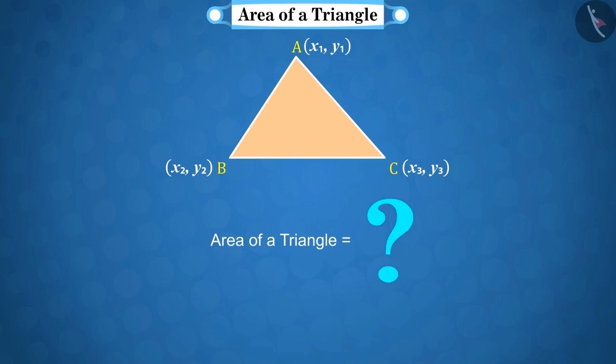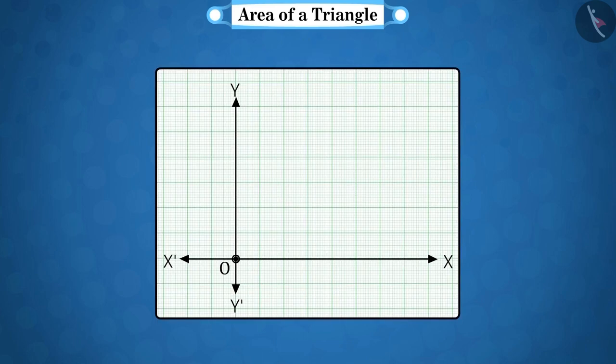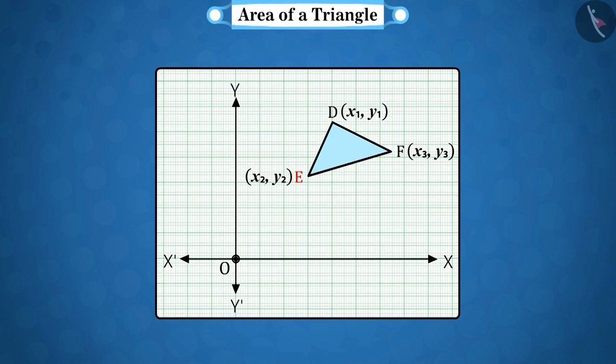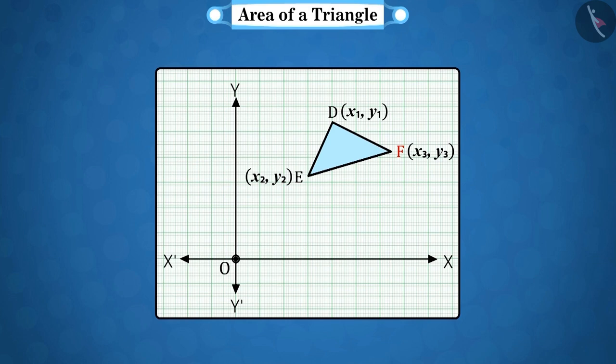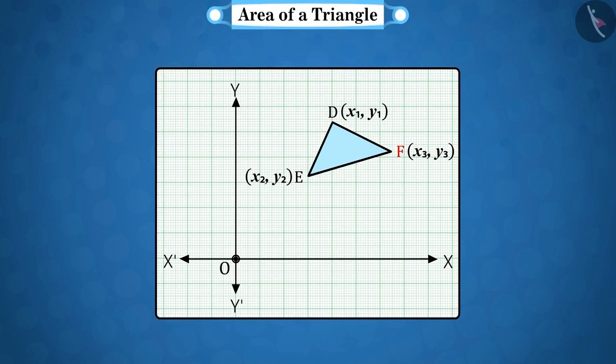Let's discuss. In a plane with x-axis and y-axis, let DEF be a triangle. The coordinates of the vertex D are x1, y1. The coordinates of E are x2, y2. And the coordinates of F are x3, y3.